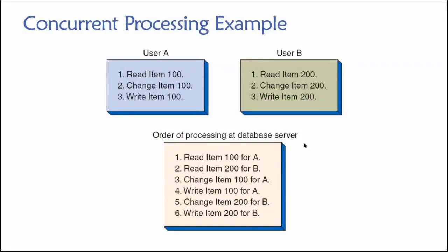Let's take a look at concurrent processing. The idea with concurrent processing is that we want to allow more than one person to use the data in our database at the same time — we have multiple people using the database simultaneously. Now we'll start with a simple example, one that's not problematic and easy for the database to handle, and then we'll move on to something a little more nuanced.